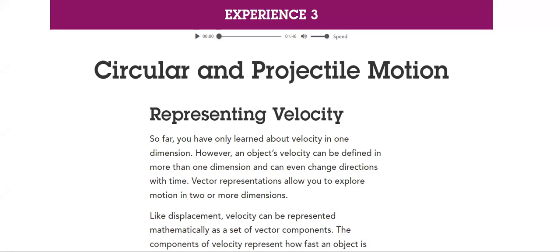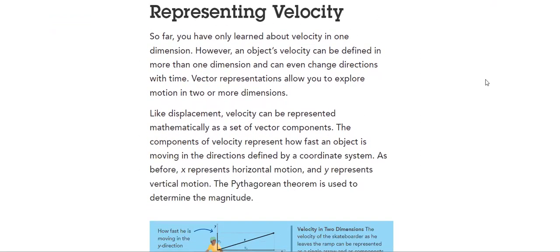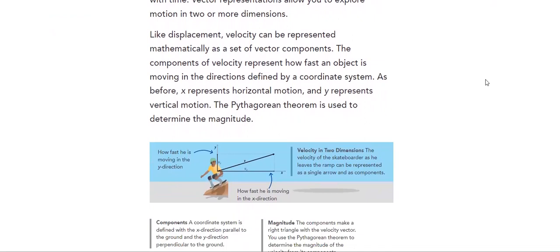However, an object's velocity can be defined in more than one dimension and can even change directions with time. Vector representations allow you to explore motion in two or more dimensions. Like displacement, velocity can be represented mathematically as a set of vector components.